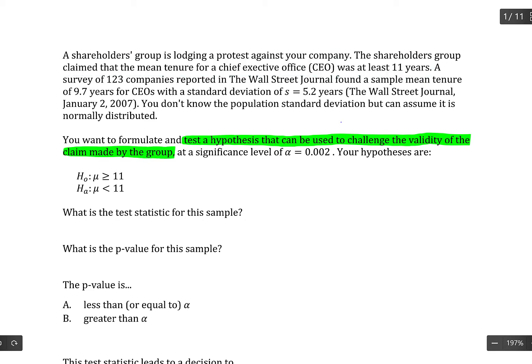And the only thing that's going to make different is that the claim is instead of being mu is greater than or equal to 11, which would be the at least 11 years, it's the complement of that. So you're testing the validity of the claim. So mu is less than 11 is what we're testing.